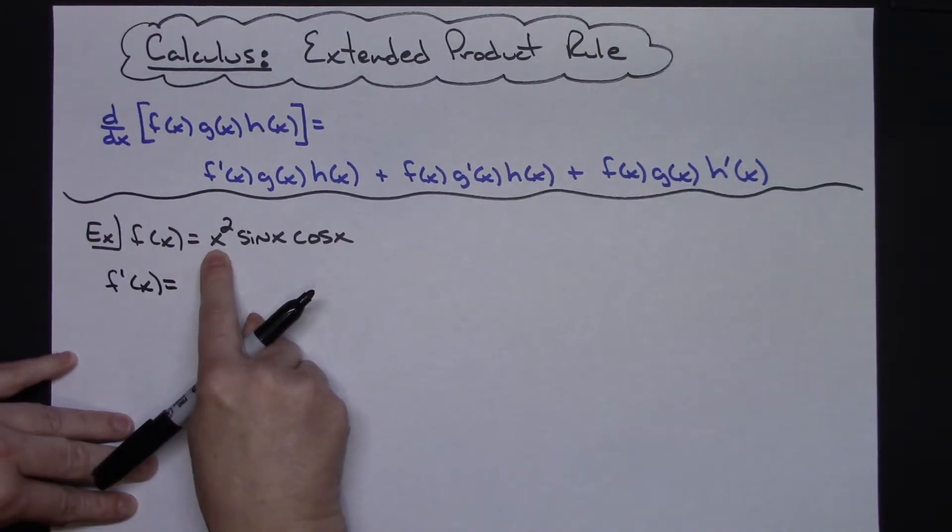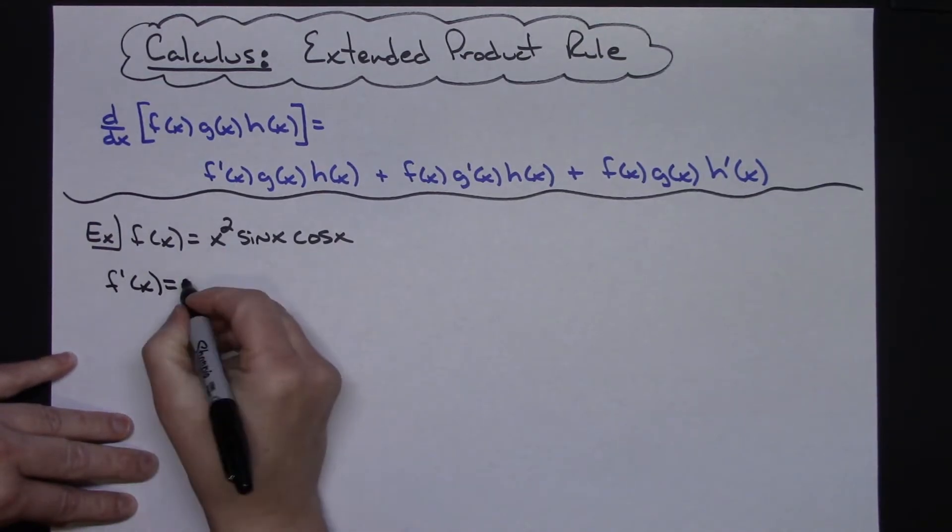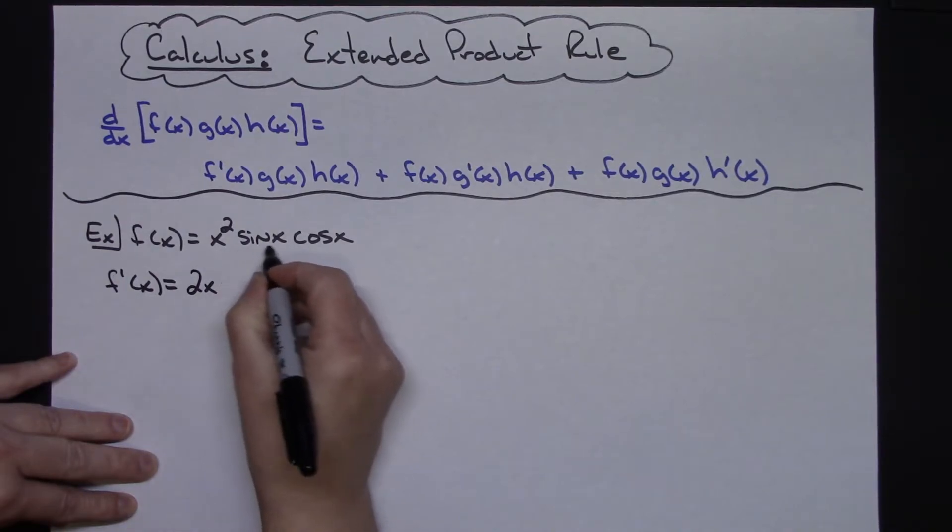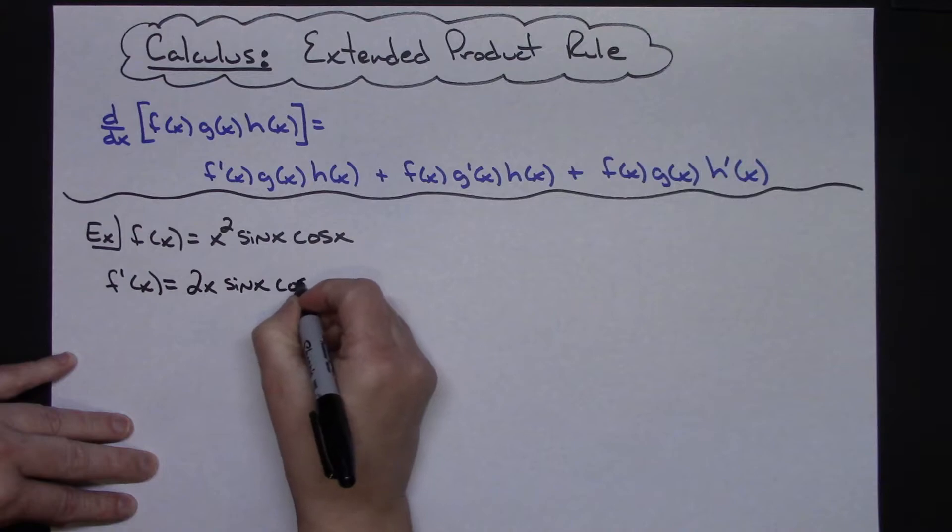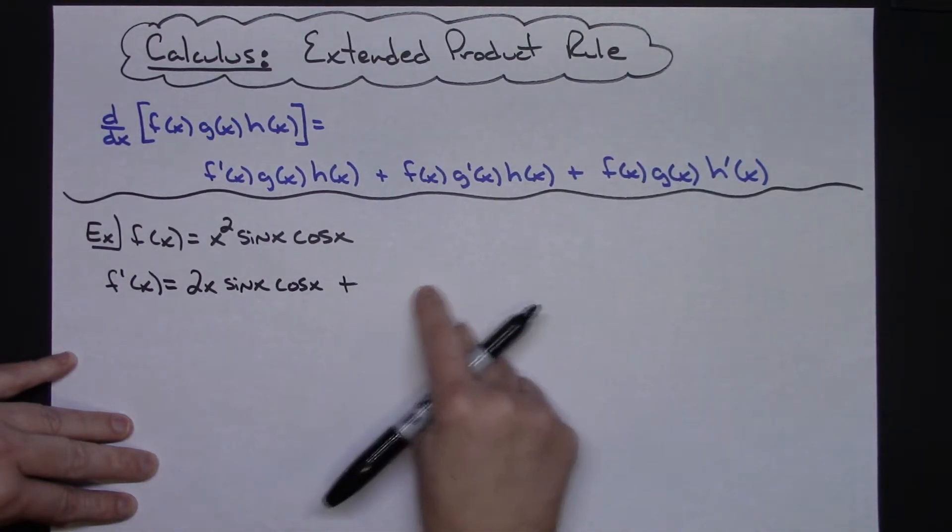On my first product I'm going to take the derivative of my first function, and the derivative of x² would be 2x. I'm going to leave the sine and cosine alone, so sine x cosine x.